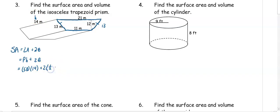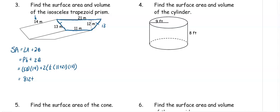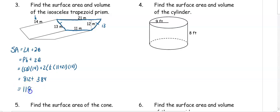To get the area of a trapezoid, it's one half base one plus base two, so 11 plus 21, times the height of the trapezoid, which is 12. So we have 58 times 14, which is 812. And then we do one half times 11 plus 21 times 12 times two, which gets us 384. And when we add those together, we get the total surface area of 1196 meters squared.